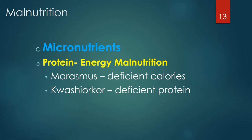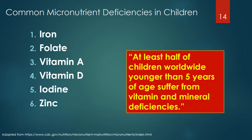Micronutrients are often referred to as vitamins and minerals and are vital to healthy development, disease prevention and well-being. Micronutrients are not produced in the body and must be derived from the diet. At least half of the children worldwide younger than 5 years of age suffer from vitamin and mineral deficiencies. The six common micronutrient deficiencies seen in children worldwide include iron, folate, vitamin A, vitamin D, iodine and zinc.